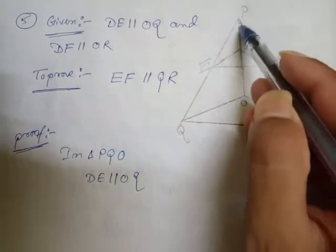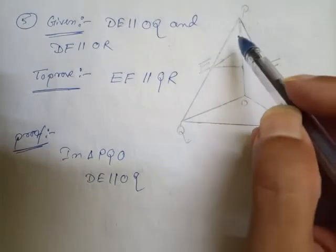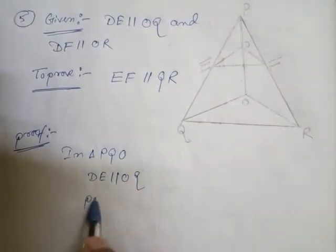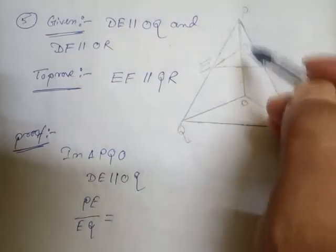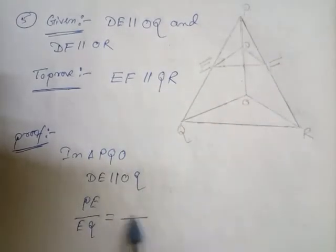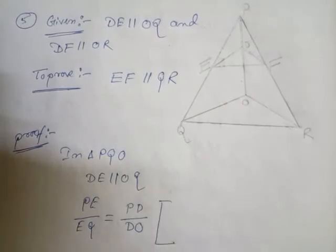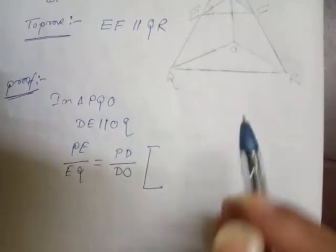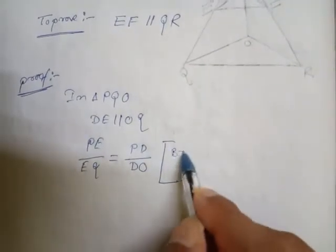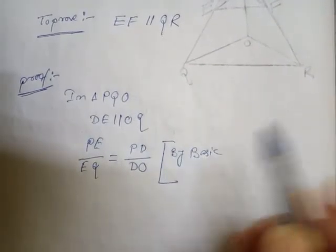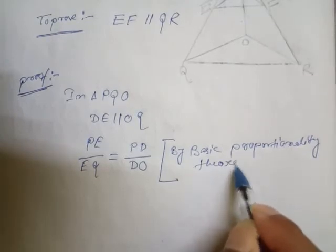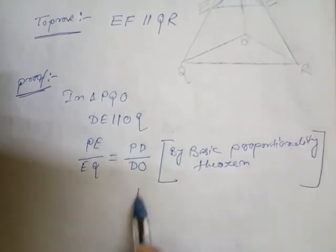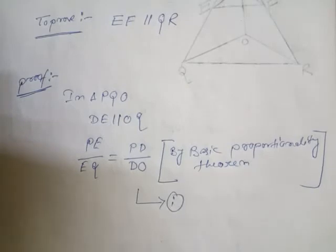So next, PE by EQ equals PD by DO. This is because of the Basic Proportionality Theorem — by Basic Proportionality Theorem. This is our equation number one.